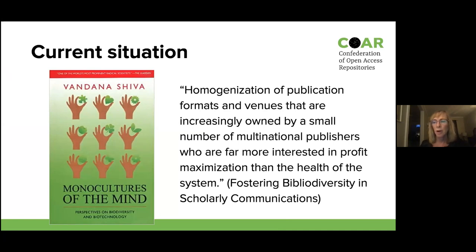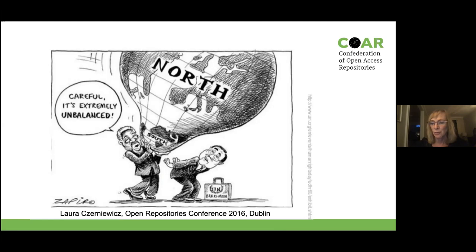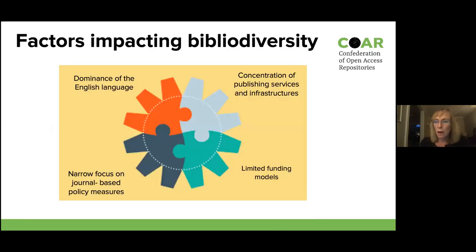This is most acutely felt by researchers in developing countries. It's a systemic issue, baked right into the system. It doesn't matter how diverse the workflow is at large publishers like Elsevier, Wiley, or Taylor and Francis — this will probably not impact the current state of bibliodiversity. We really need systemic changes. In our paper, we talked about four highly interconnected factors contributing to the decline in bibliodiversity: the predominance of the English language, the concentration of publishing services and infrastructures, limited funding models, and research evaluation frameworks.